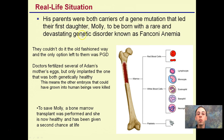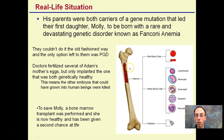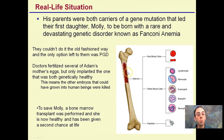Both parents were carriers for a gene mutation that led to their first daughter, Molly, being born with a rare and devastating genetic disorder — anemia. What she had to go through was a bone marrow transplant, and she is now healthy and given a second chance at life. Red blood cells come from marrow; that's where the genetic disorder was. Through the process of a marrow transplant, which is a very difficult and painful process, Molly was given a new chance at life.